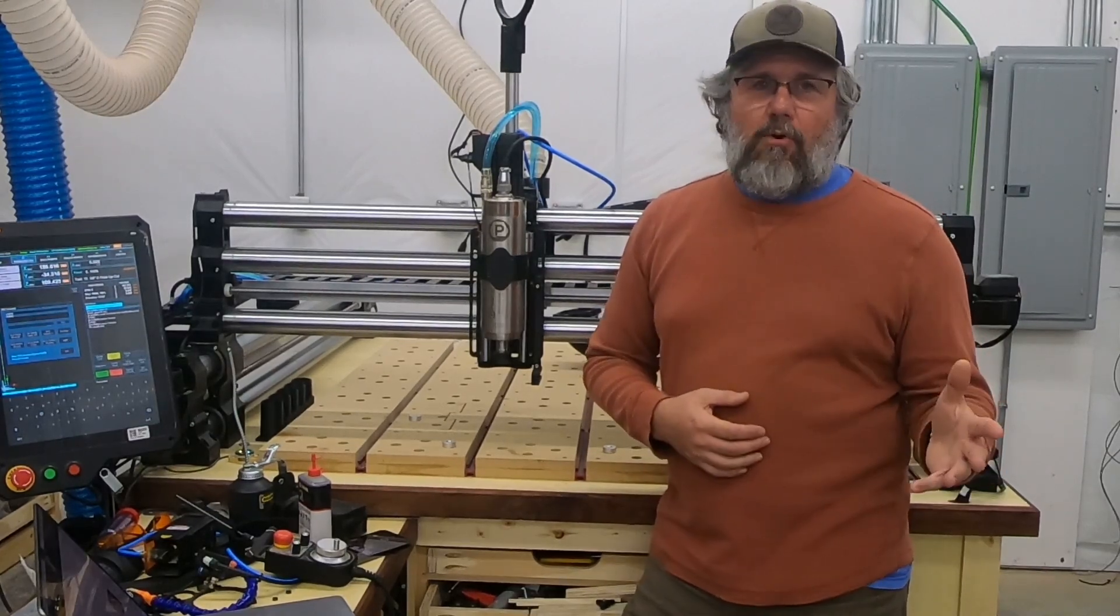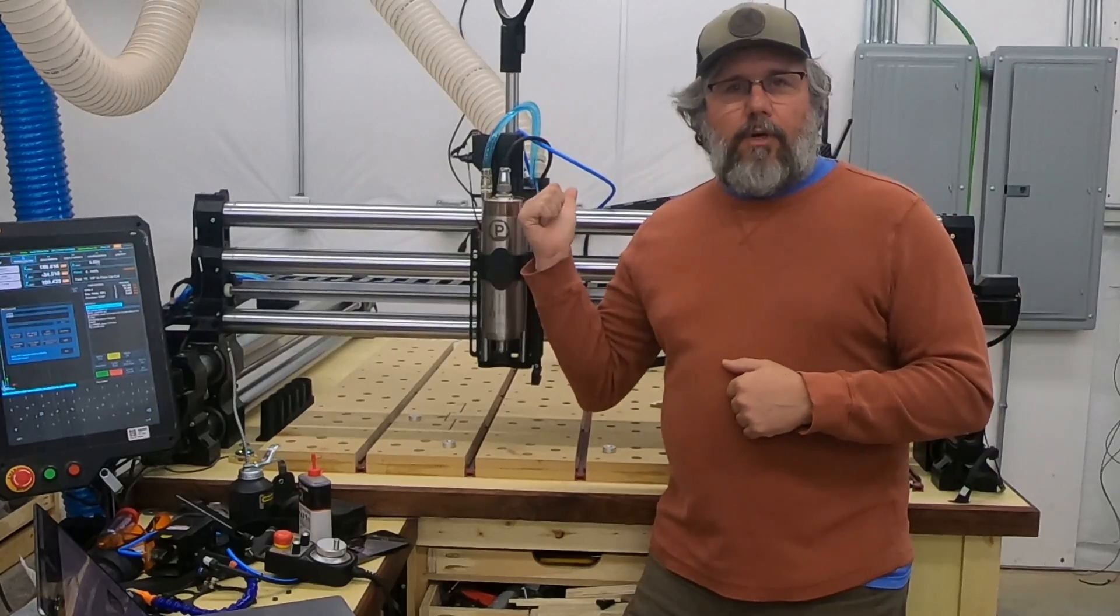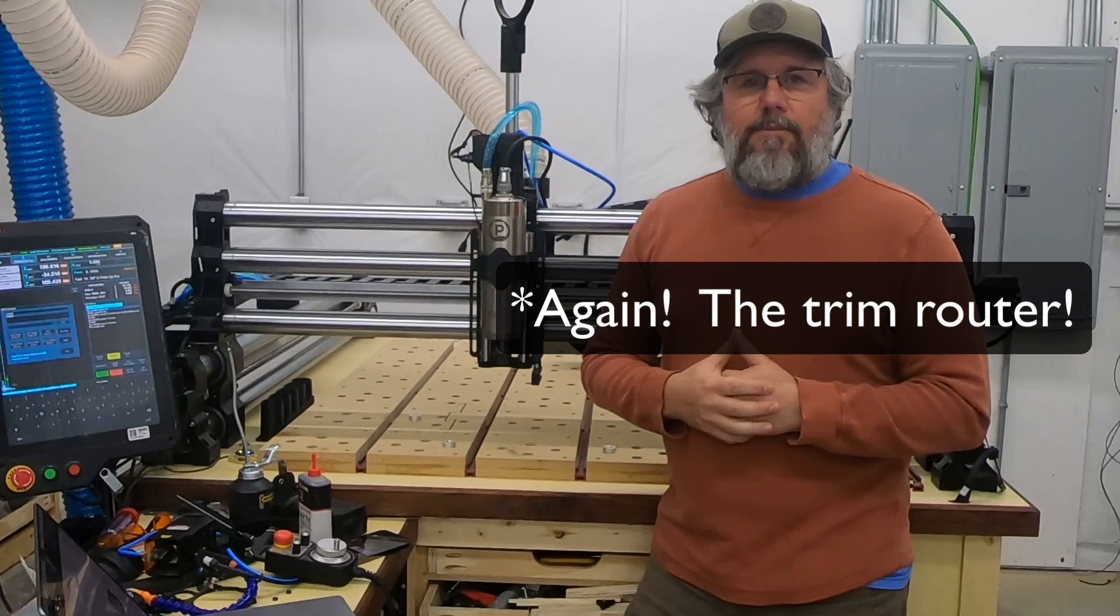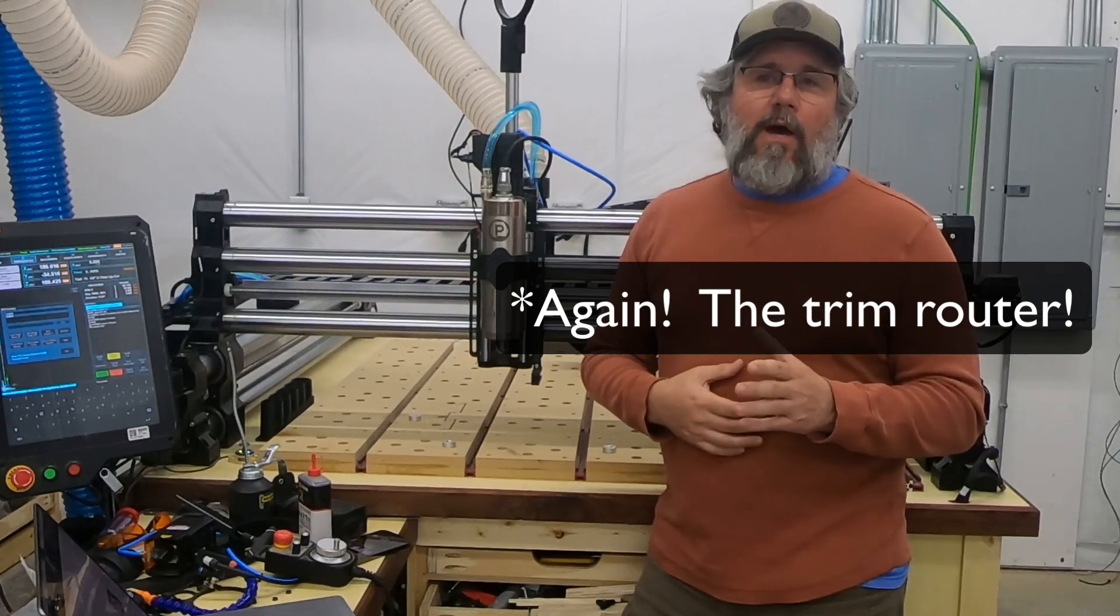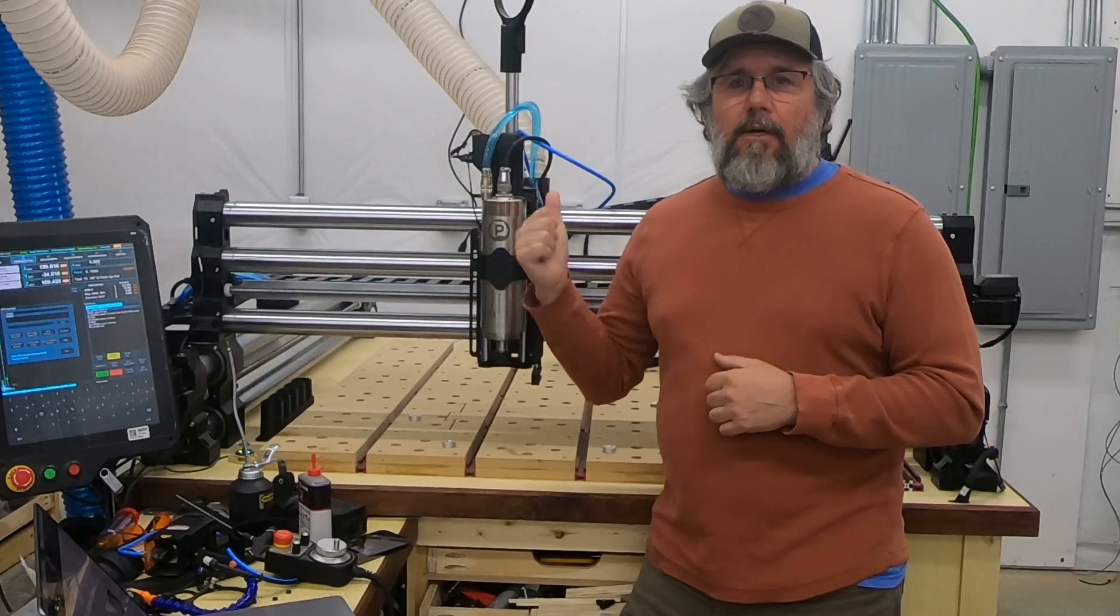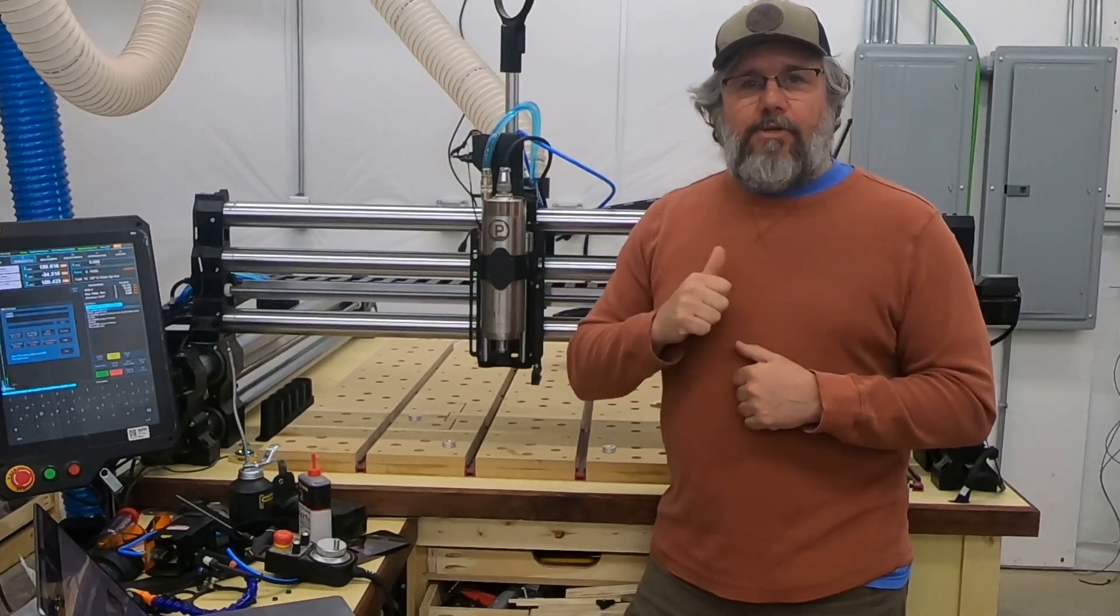Next, let's talk about power. This guy clocks in at three horsepower, whereas a spindle router, the Makita specifically comes in at 1.25 horsepower. So this is more than twice as powerful as the Makita. That allows it to churn through material much faster with much bigger tools and not really breathe hard while doing it.